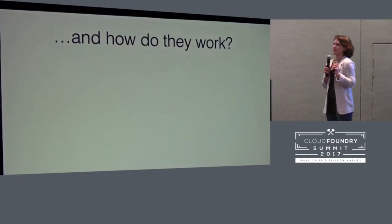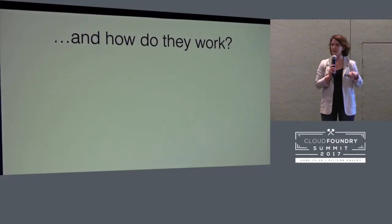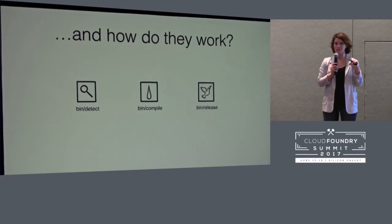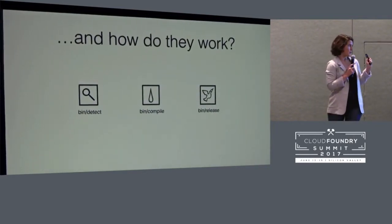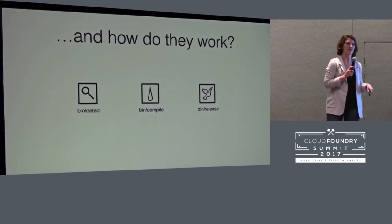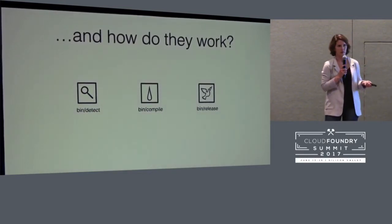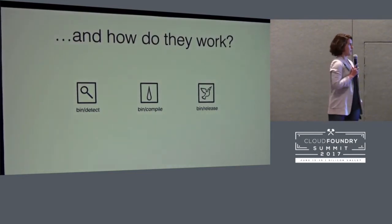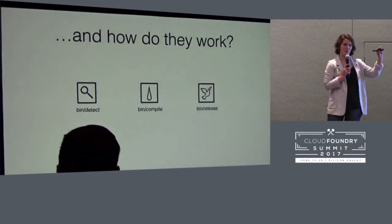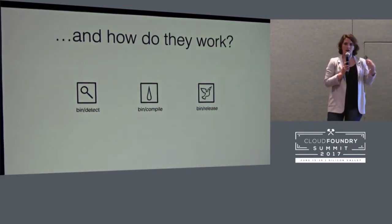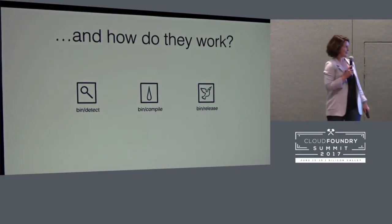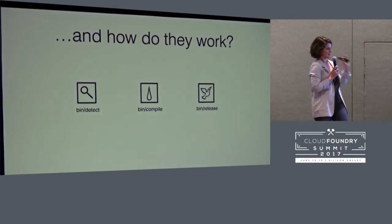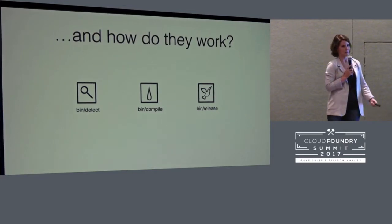Which brings us to how they work. Every Buildpack, as they work currently, has three scripts: detect, compile, and release. The detect script won't necessarily run — it only runs if you haven't specified a Buildpack in your CF push command or in your app manifest. But if you've just CF pushed and let it rip, then the detect script will run for each Buildpack in order to determine whether it's the right one. And if the answer is yes — yes, I do need a Ruby Buildpack — then detect will continue on to the appropriate compile script for whichever Buildpack was detected.